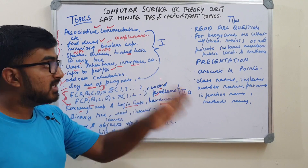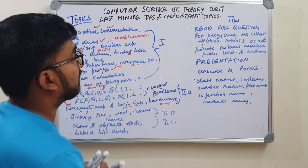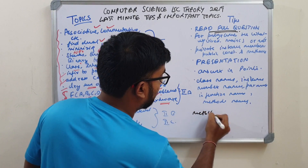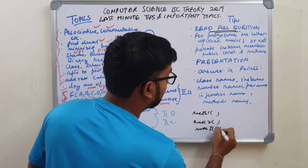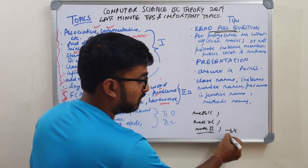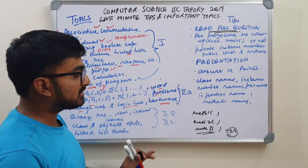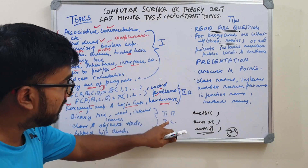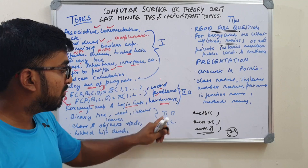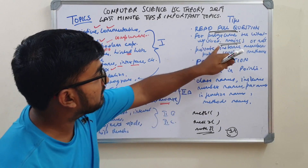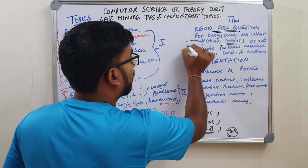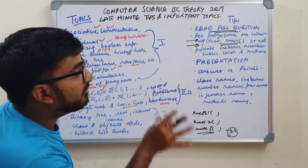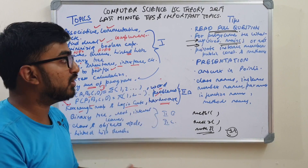Read the full question — this is very important. Sometimes they will define three methods but tell you not to implement one of them; do not write that extra implementation. Also check whether they are asking for a main method or not. In Section 2B they will ask for main mostly, but in Section 2C they will not ask for main. Read the last three or four lines of the question carefully — that exactly tells you what you need to code.